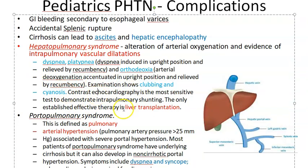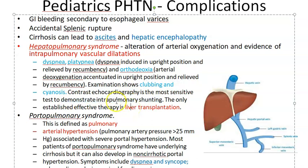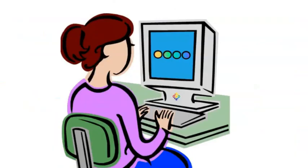In hepatopulmonary syndrome you can see clubbing of fingers and cyanosis because oxygen is reduced. Echocardiography is done to demonstrate intrapulmonary shunting. The only treatment for hepatopulmonary syndrome is liver transplantation — unlike EHPVO, which can be managed medically.